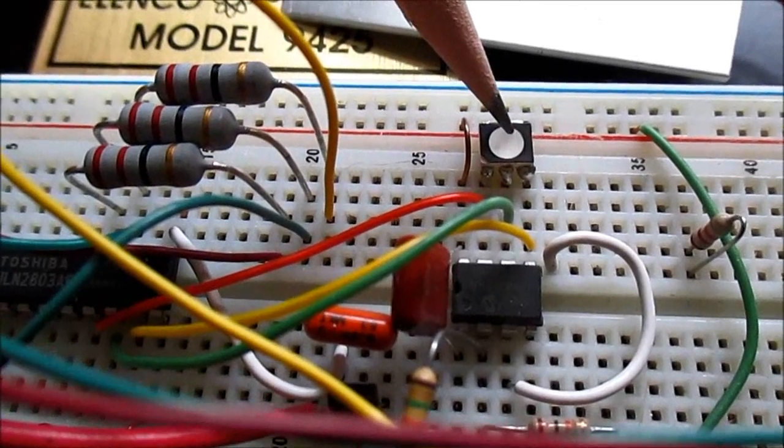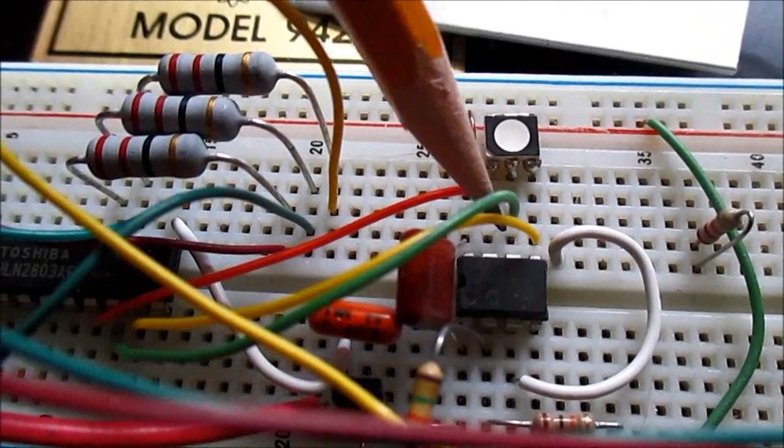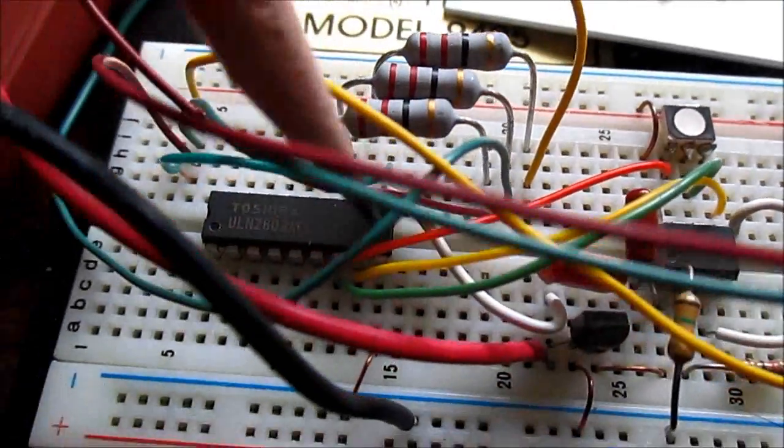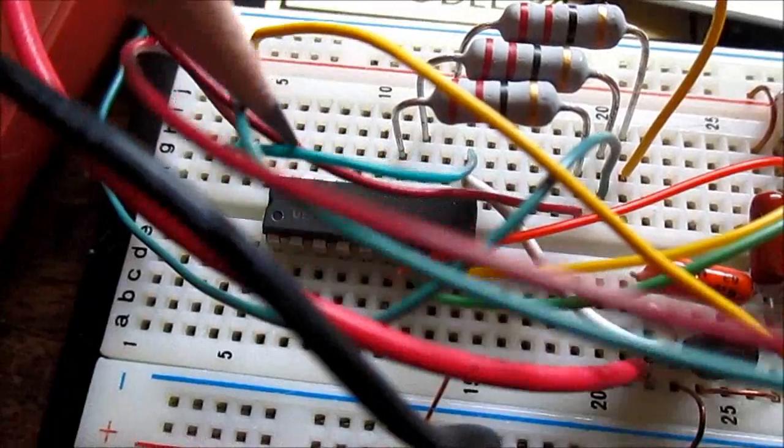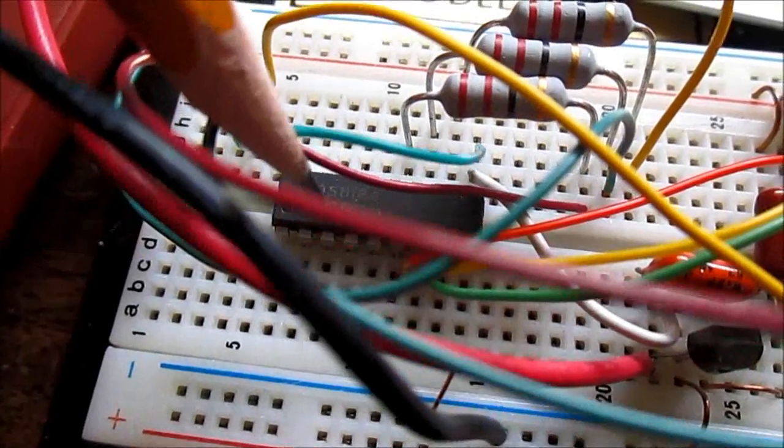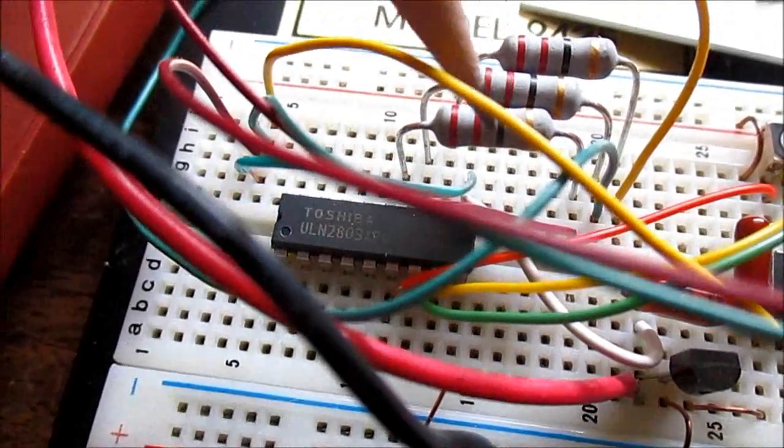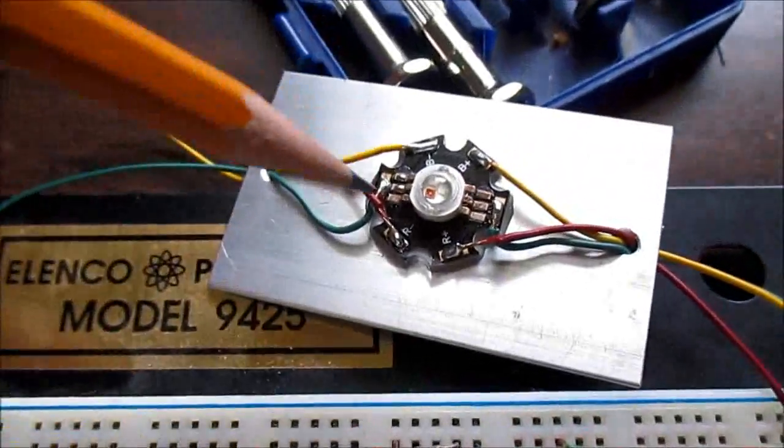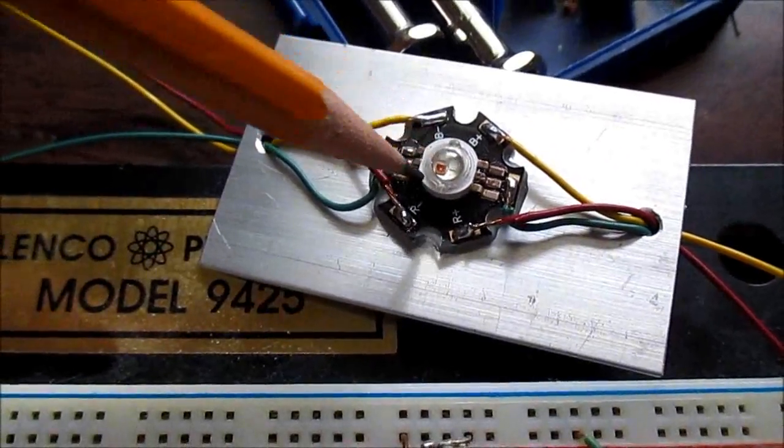But it's a Cree RGB LED. But what I'm doing is taking the outputs from the chip and also bringing it over to the inputs of the ULN2803. And the outputs go to current limiting resistors, and it drives this power RGB LED.